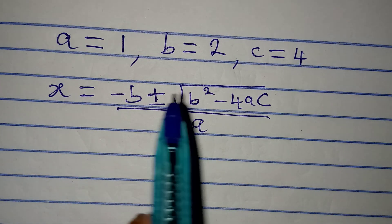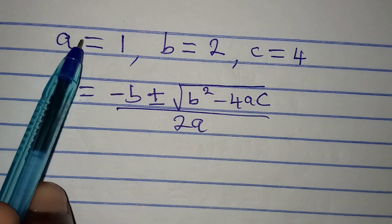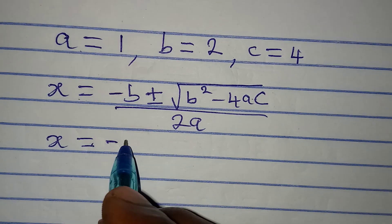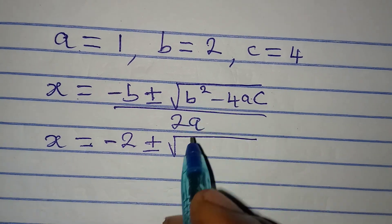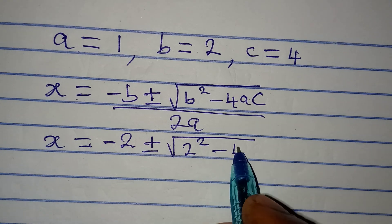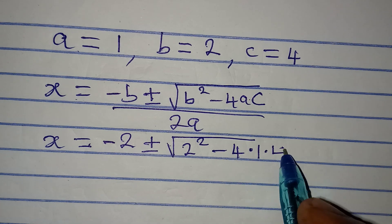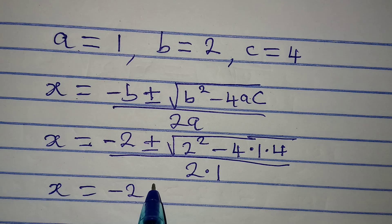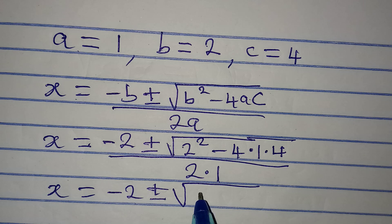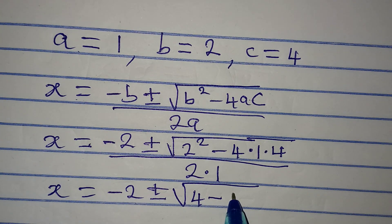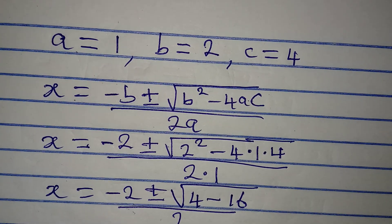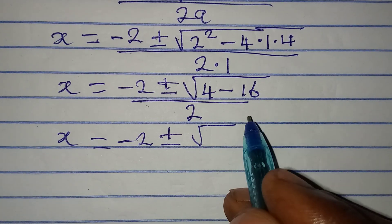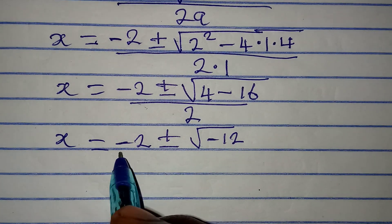Substituting into the quadratic formula: x equals negative 2 plus or minus the square root of (2 squared minus 4 times 1 times 4), all over 2 times 1. This gives x equals negative 2 plus or minus the square root of (4 minus 16) over 2, which is the square root of negative 12 over 2.